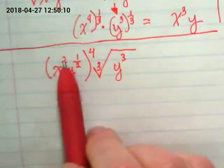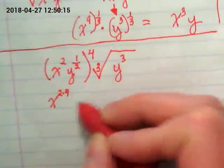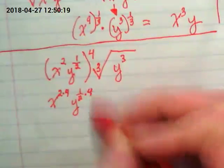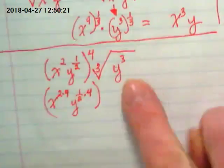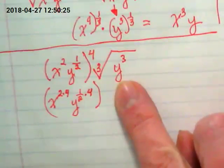This is going to get multiplied by this. So, x, two times four, y, one-half times four, and then what's going to happen with this radical? It's just y.